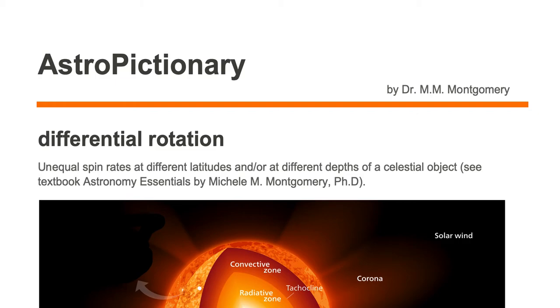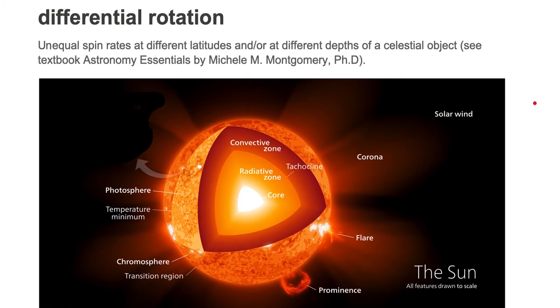Differential rotation is unequal spin rates at different latitudes and/or different depths of a celestial object. Let's take a look at the sun as our example.